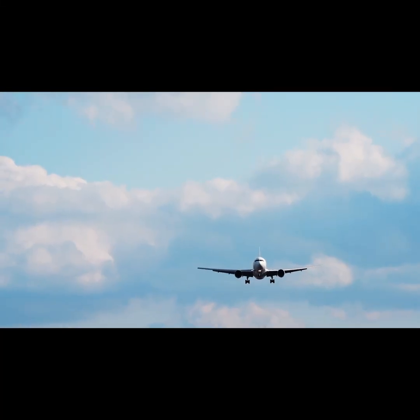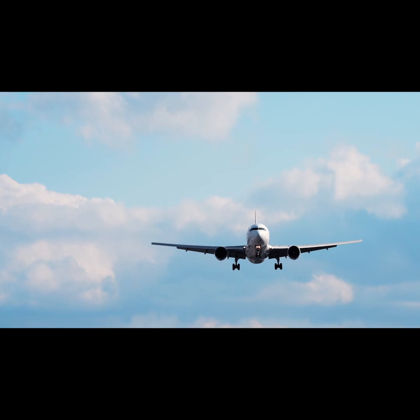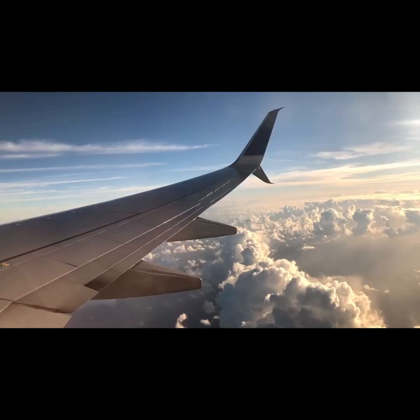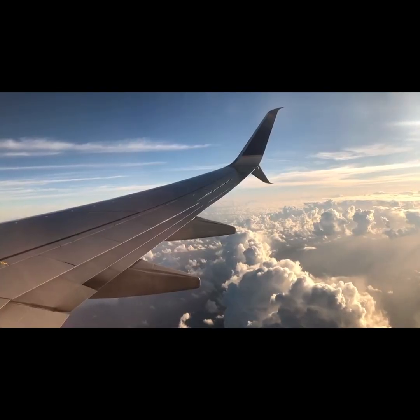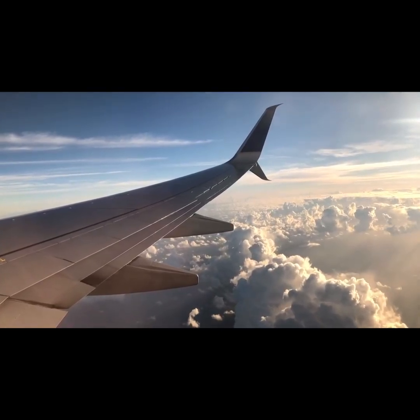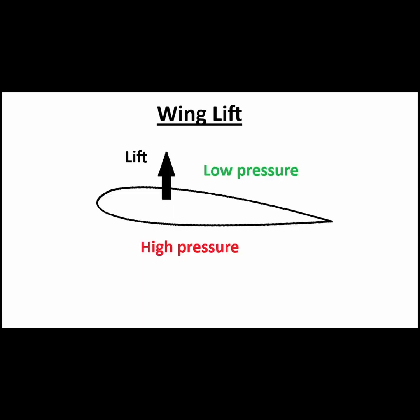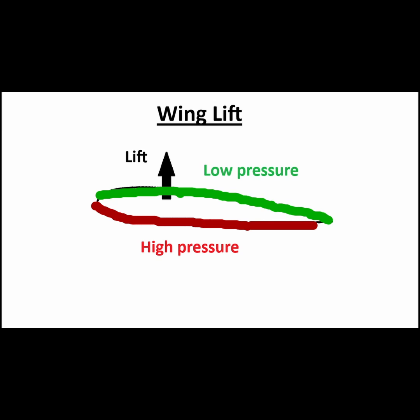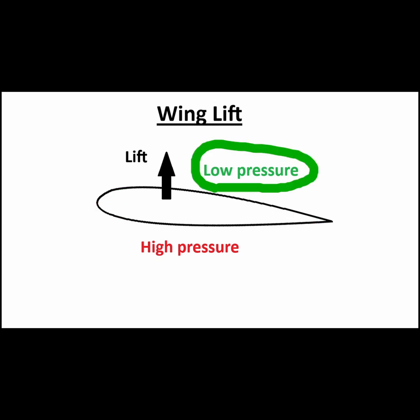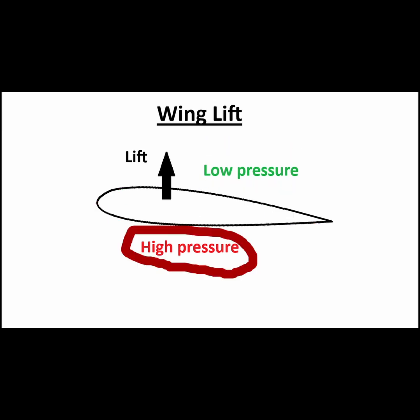Modern aircraft are much heavier than air, so how is it that they are able to fly? Airplanes generate lift using wings or airfoils. Wings produce lift by generating an air pressure difference between the top and bottom sides of the wing. Lower pressure on the top of the wing versus higher pressure below produces a net force pointing upward, keeping the plane aloft.